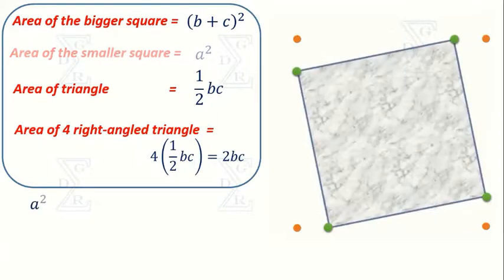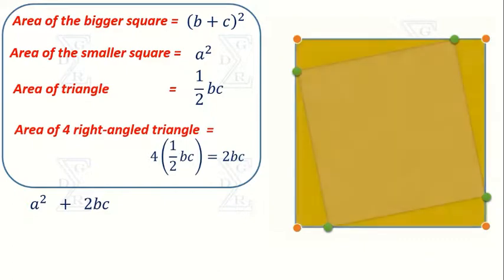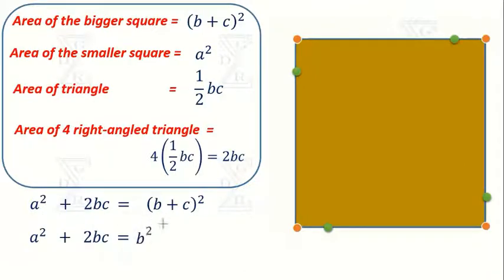The sum of the area of the smaller square and the area of four right-angled triangles is equal to the area of the bigger square. In the RHS, (b + c)² can be written as b² + c² + 2bc. After simplification, a² = b² + c². Hence the theorem is proved.